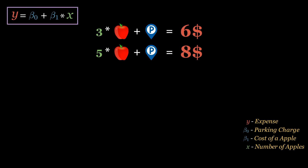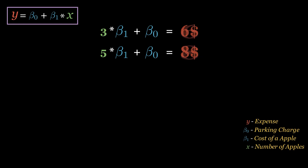Now let's fill in the values. For the first trip, the equation is 3 multiplied with beta one plus beta zero equals 6. For the second trip, the equation is 5 multiplied with beta one plus beta zero equals 8. Now can you solve these equations for beta zero and beta one? Think for a moment before proceeding further.